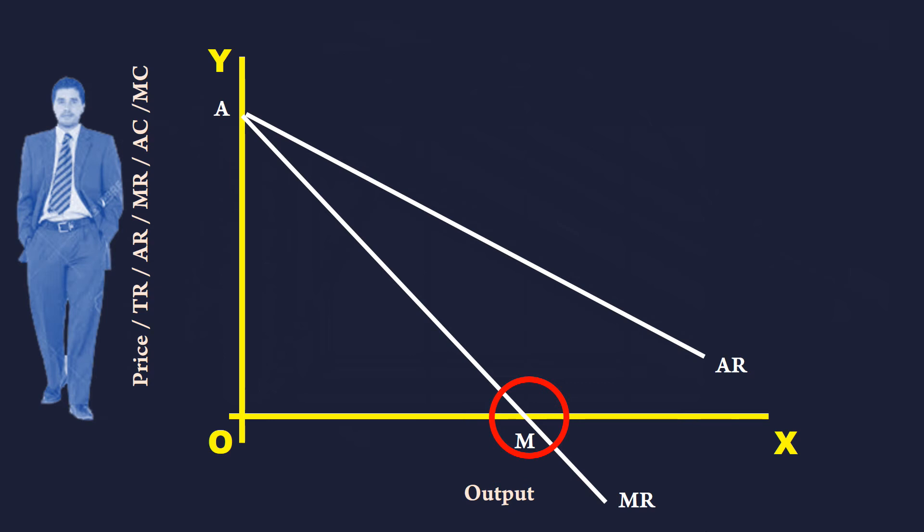To fix the price, we have to travel vertically to the AR curve. ME or OP is the revenue maximizing price.